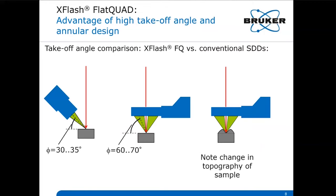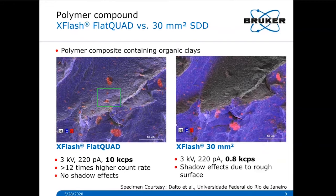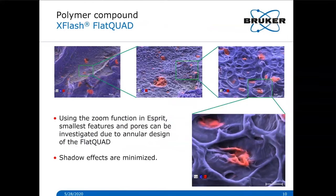Furthermore, because the detector is sitting above the sample, we avoid shadow effects on samples with strong topography, as you can see on the right. Here is an older example to compare the difference: both measurements were acquired with the same parameters at 3 kV and 220 picoamps. On the right side, the map from the standard detector shows no signal and clear shadowing effects, whereas on the left the Flat Quad shows nearly no shadowing. We can also zoom in as shown by the green square and make even the smallest pores and features visible.